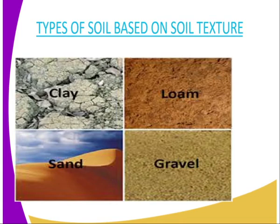The types of soil based on soil texture: we have clay soil, which contains very fine soil particles; then sandy soil, which has coarse soil material; then gravel; and finally loam, which has medium-sized soil particles.